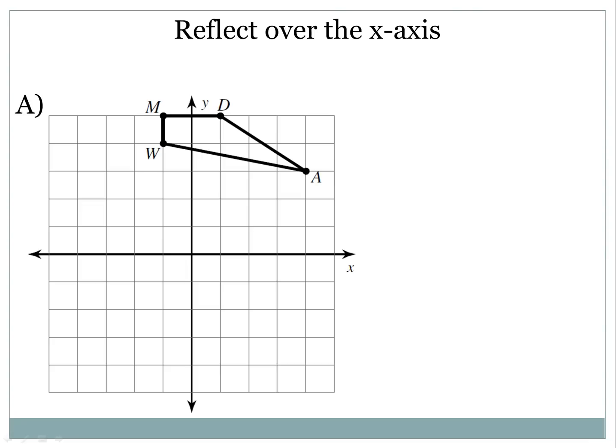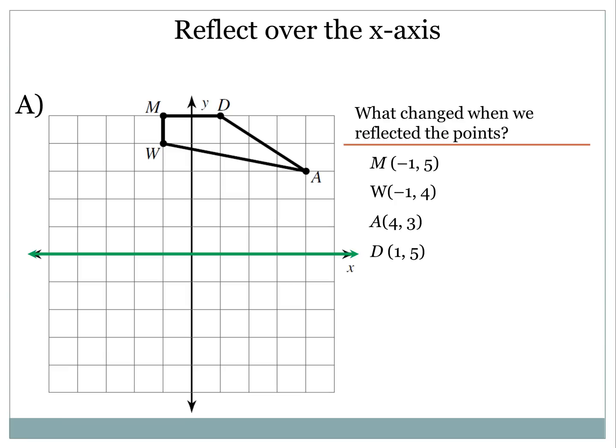All right, so we're going to reflect this figure, MDAW, over the x-axis, and of course, you'll remember this is the x-axis, it's blinking in green right now, and it's horizontal. As I reflect that figure, we first take a look at the original points, and the original points are listed here on the screen for M, W, A, and D. As we see how it's reflected over that green line, we see that it's a mirror image, and it's created below it, and you see that mirror image there for M-prime, W-prime, A-prime, and D-prime.